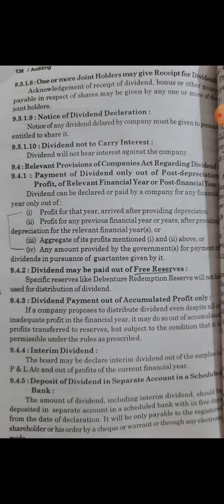Next: deposit of dividend in a separate account in a scheduled bank. The Companies Act provides that when a company declares dividend, the portion of divisible profit must be transferred into a separate account. Such a separate bank account should be opened in a scheduled bank, and this amount must be kept separately by the company.